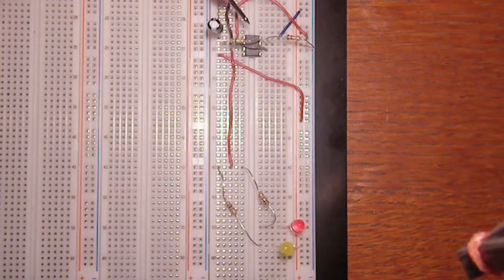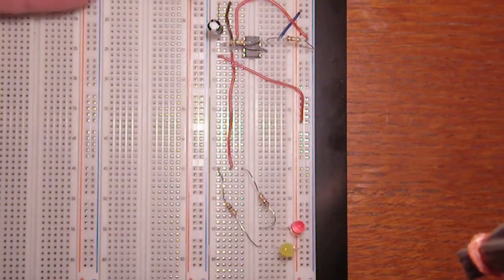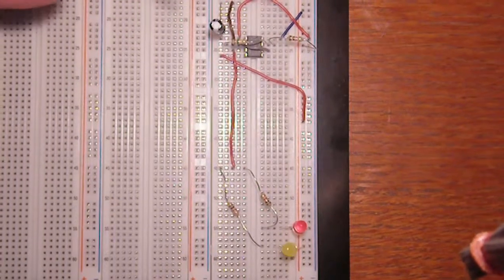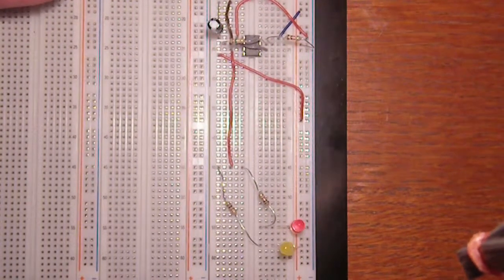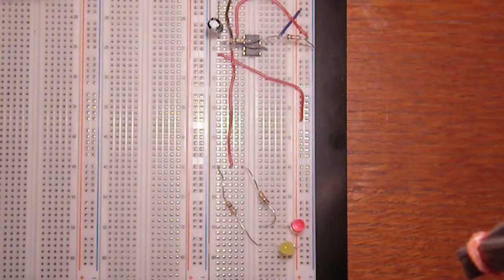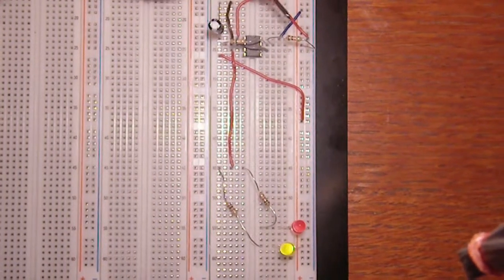The capacitor fills up and discharges. The speed of that depends on the values of both resistor 1 and resistor 2.